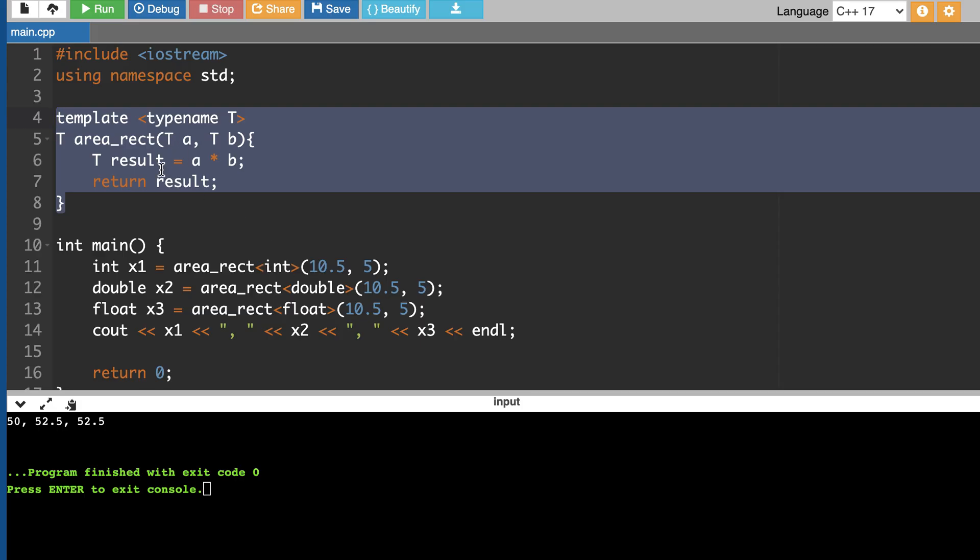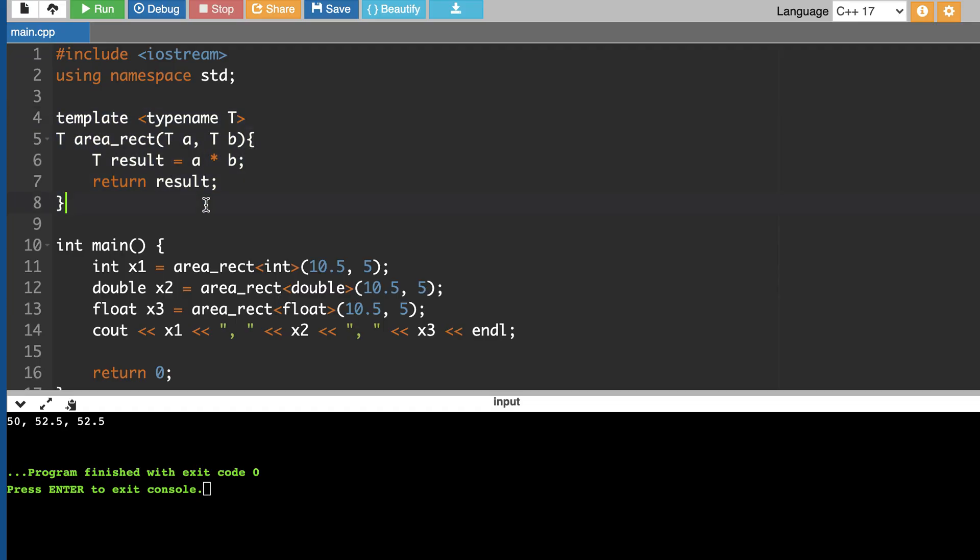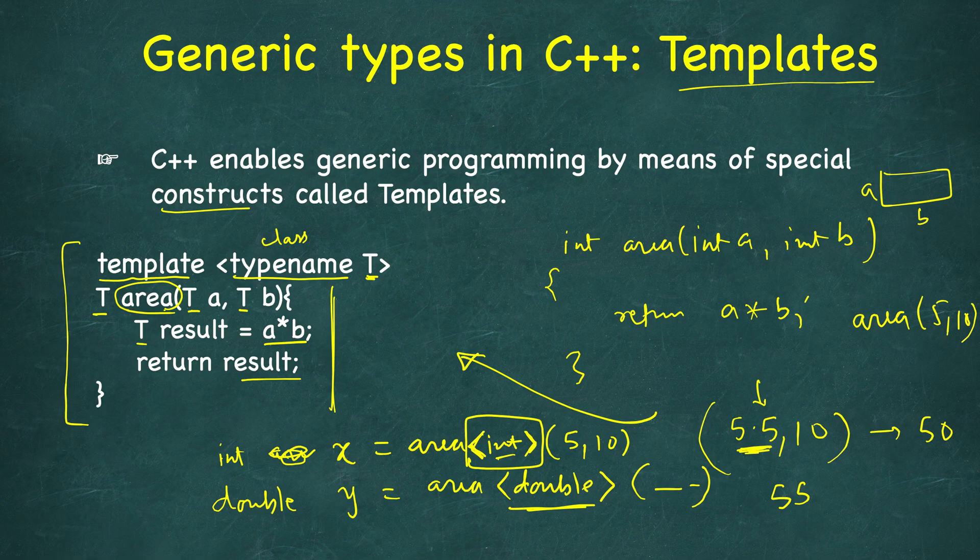So you get an idea here—we have defined it just once but we can use it based on our requirement. Here you may not get motivated since it's a very simple example. Why would you do it? But we have very complex functions and algorithms which are implemented in this generic way and it's very helpful, and it can be used with different types.